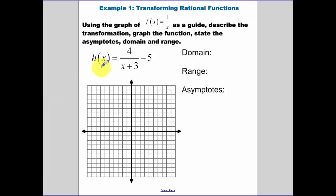Using the graph of y equals f of x equals 1 over x as a guide. Describe the transformation. Graph the function. State the asymptote's domain and range. Plus 3, just like what we've been doing. Opposite of what it appears to be. Moves it, left 3. So our asymptote that was the y axis now moves over 3 units.